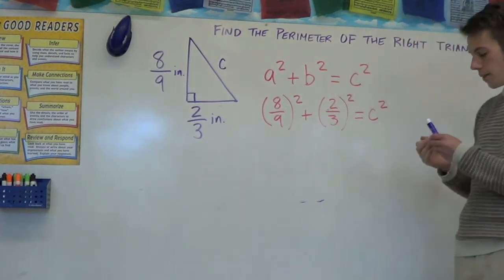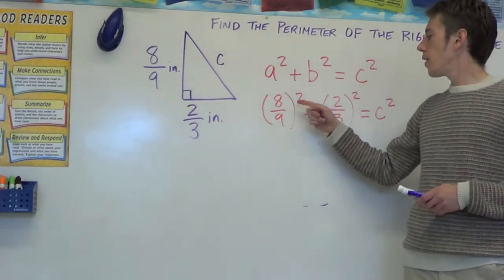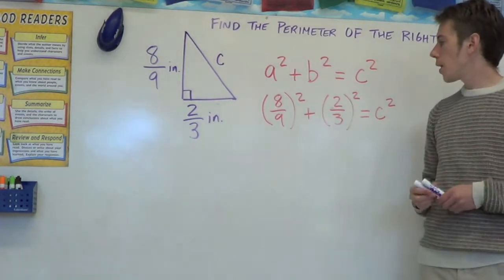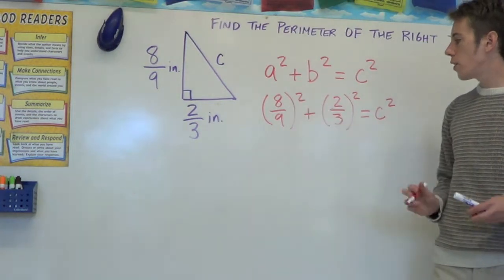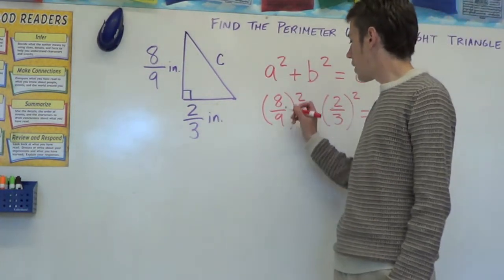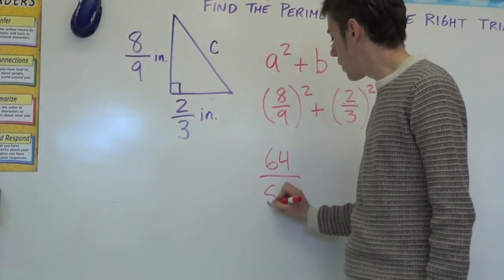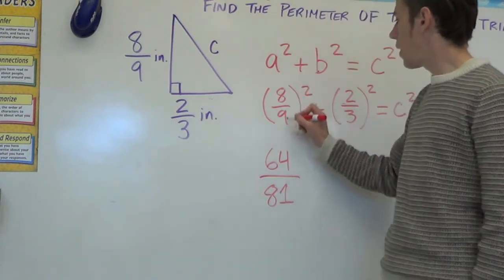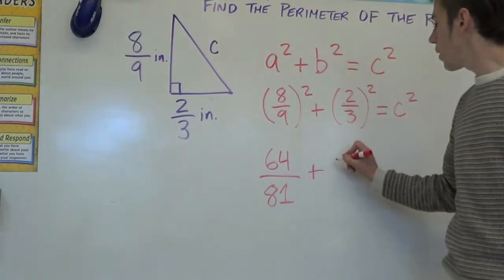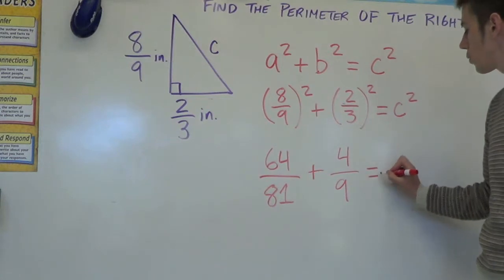So we're going to have to square those fractions. Now when you're squaring fractions, you're multiplying eight ninths by eight ninths. You just multiply the top by the top and the bottom by the bottom. So we can actually just square the eight and square the nine and get a fraction as our answer. Eight squared is 64. Nine squared is 81. So eight ninths squared is 64 over 81. Two thirds squared is going to be two squared or four over three squared or nine. So four ninths equals C squared.